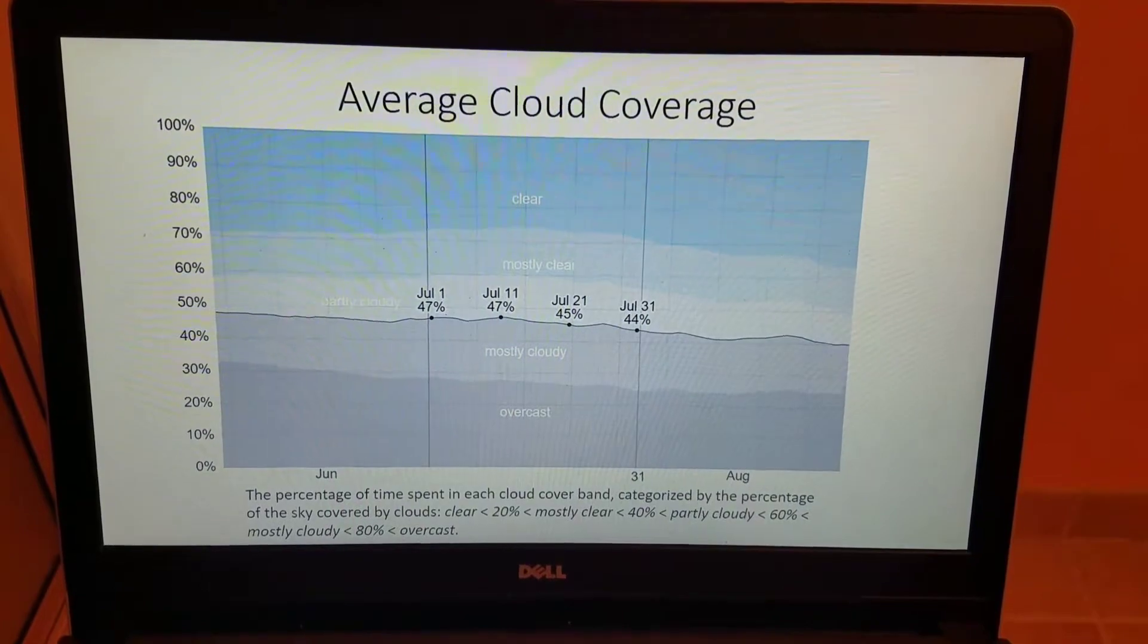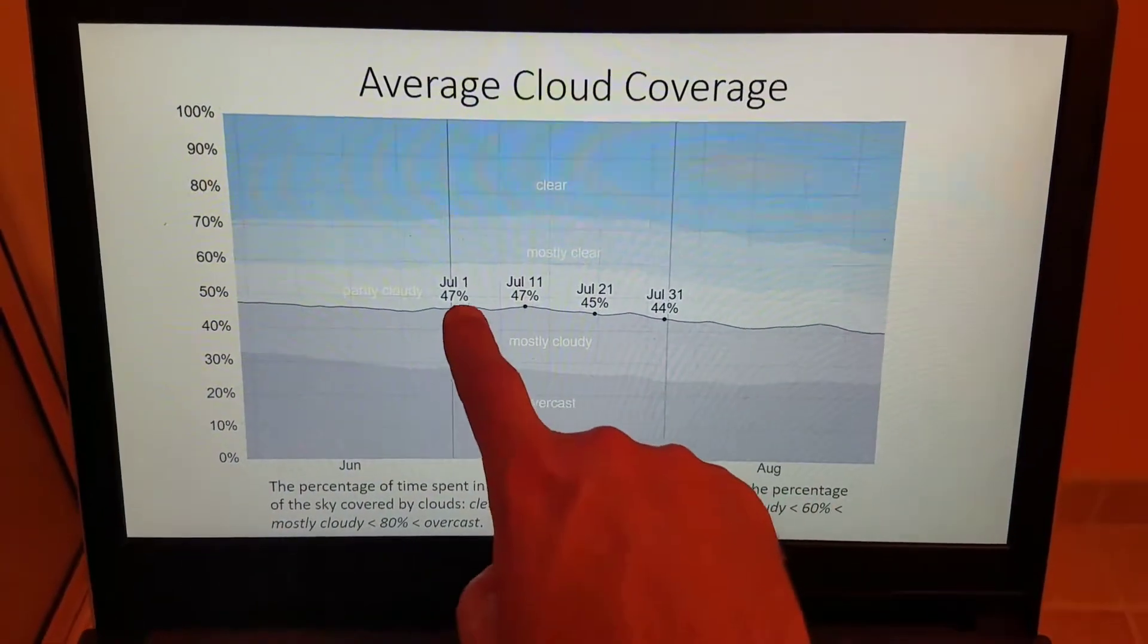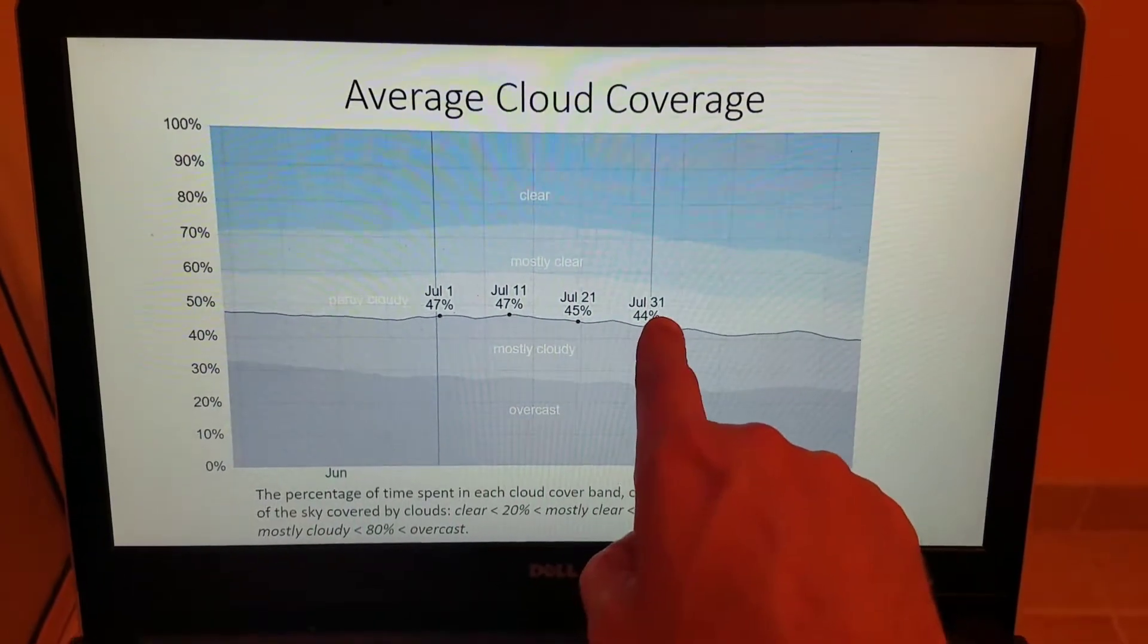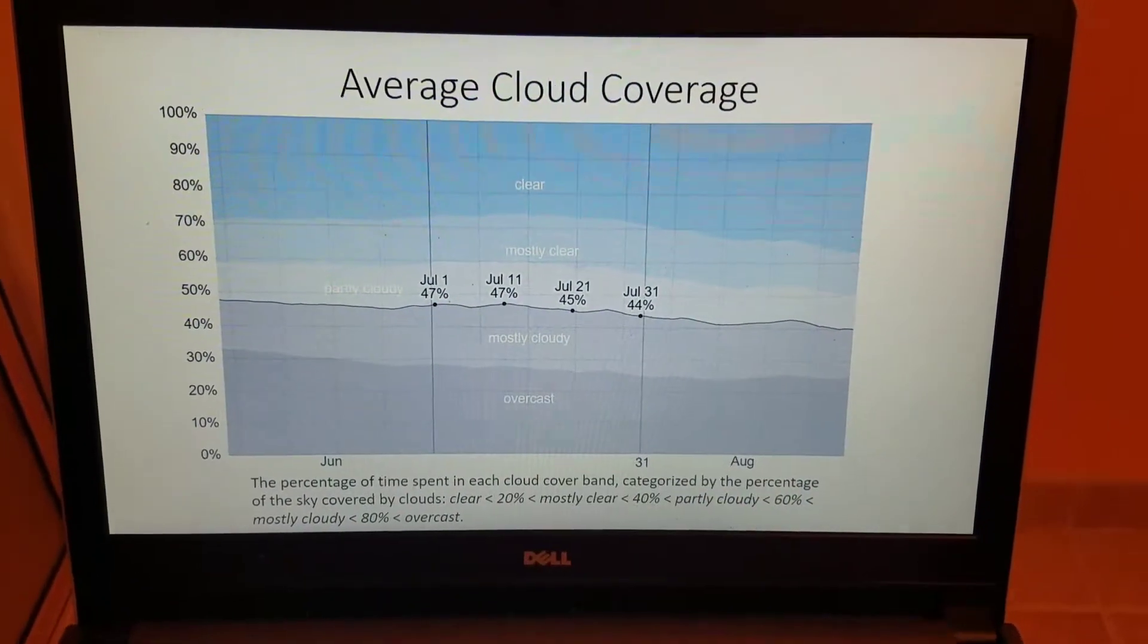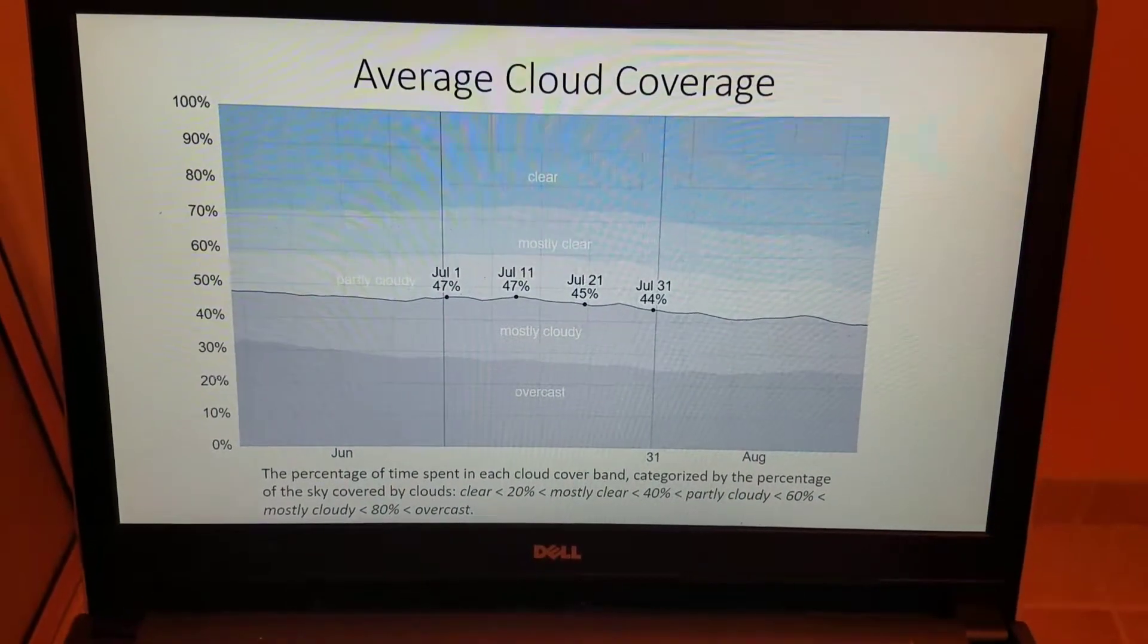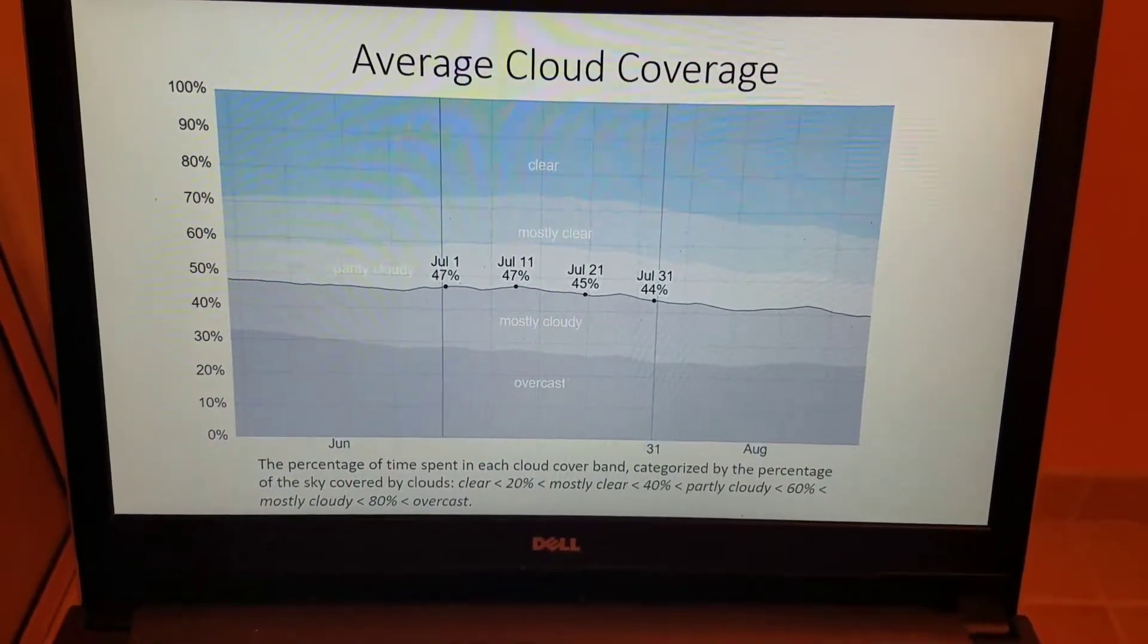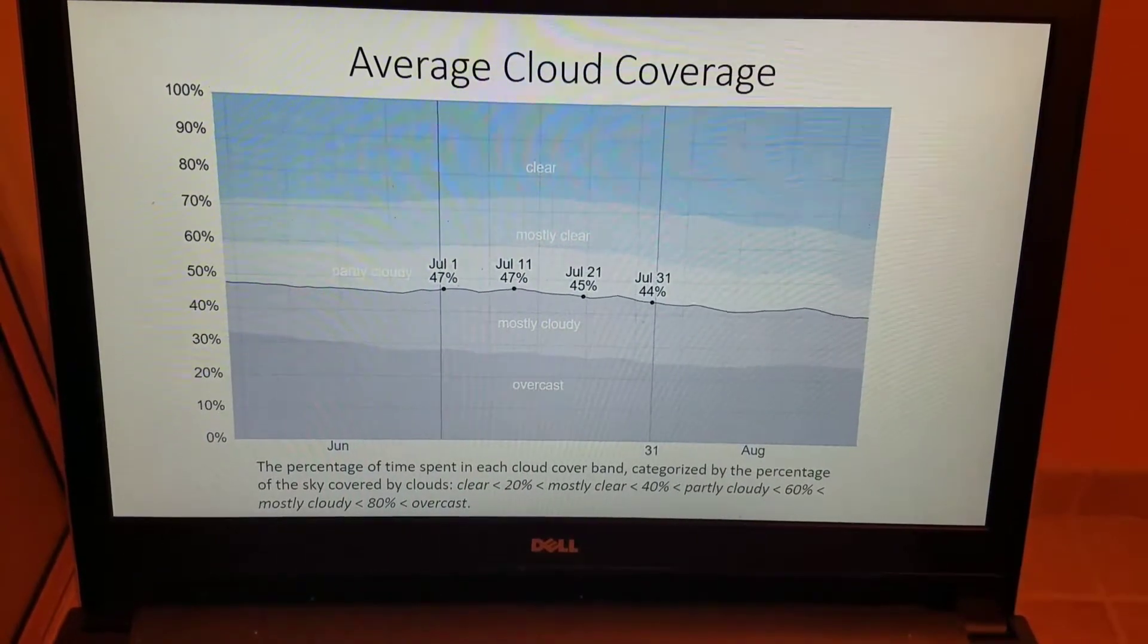The average cloud coverage ranging from July 1st all the way through July 31st. We have 44% to 47% cloud coverage. Typically, a partly cloudy situation across the skies of Southeast Virginia for the month of July. Really not much change there.